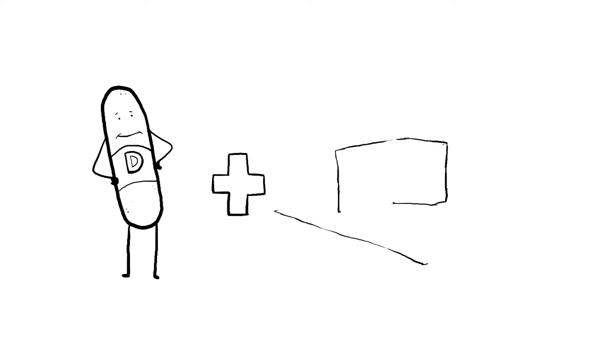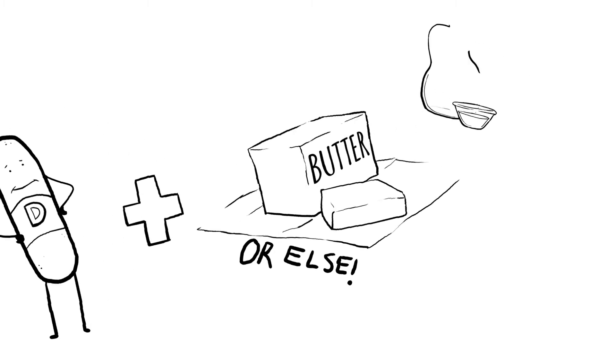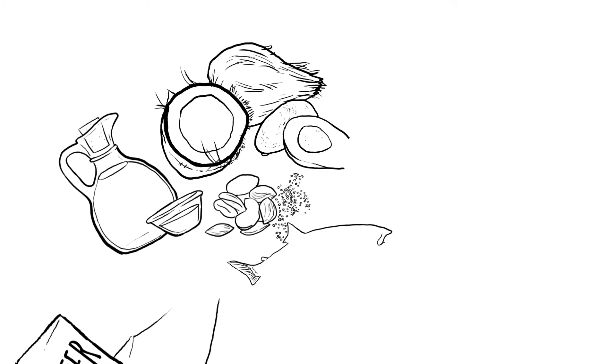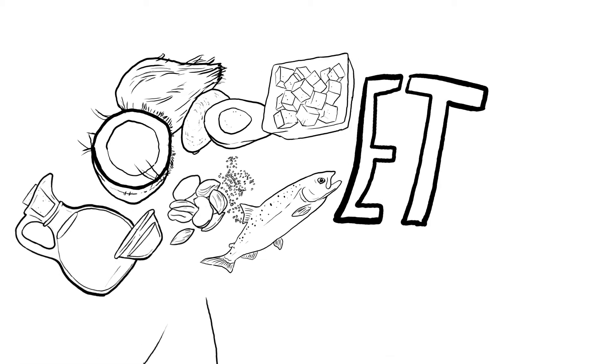It's a fat-soluble vitamin, which means you need to have it with some form of fat or it won't absorb as well. Some healthy fats to have with it are oils, nuts, seeds, avocados, coconut, fish, butter, tofu, etc. There's lots of choices.